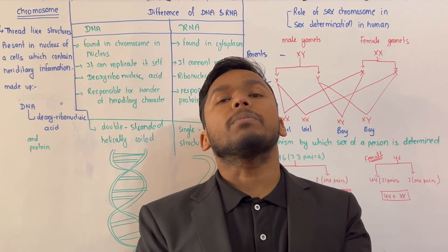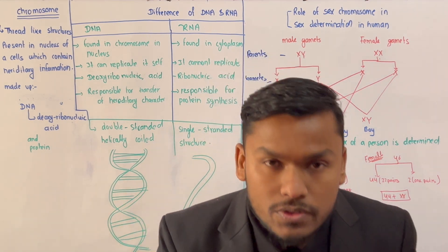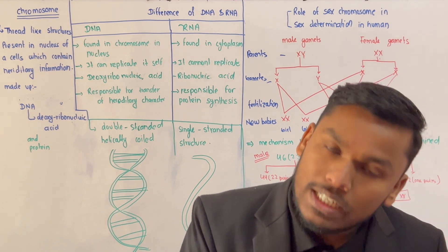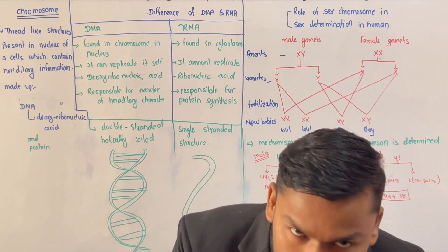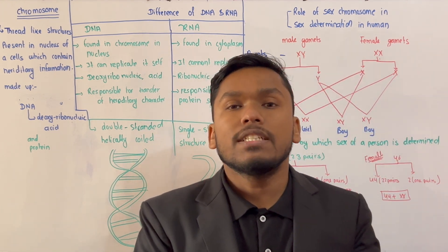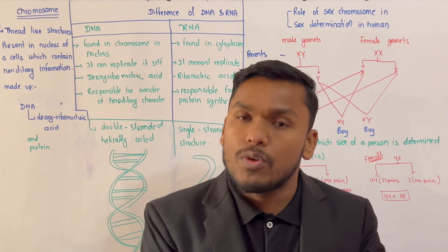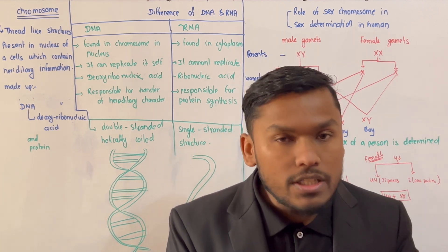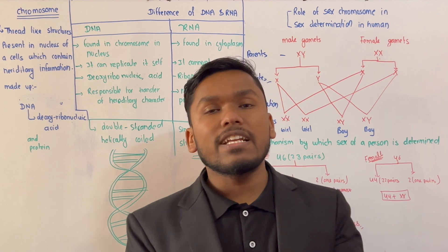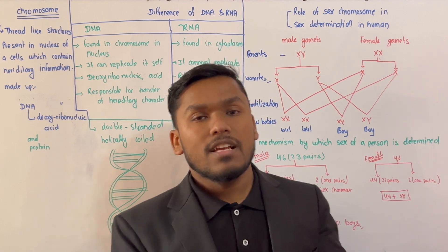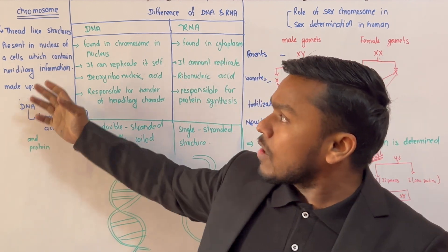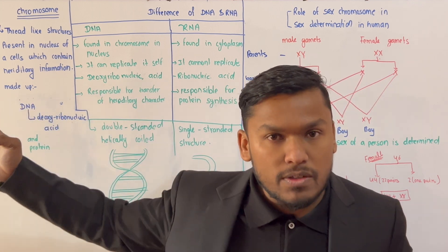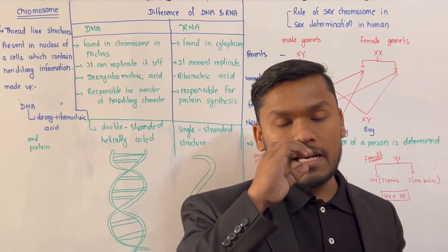The chromosome is made of DNA and protein. DNA stands for Deoxyribonucleic acid, and RNA is its full form counterpart. The chromosome is the thread-like structure in the nucleus of the cell which is responsible for the hereditary character.